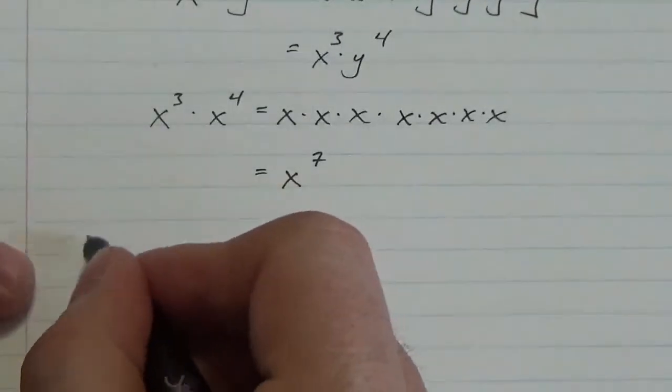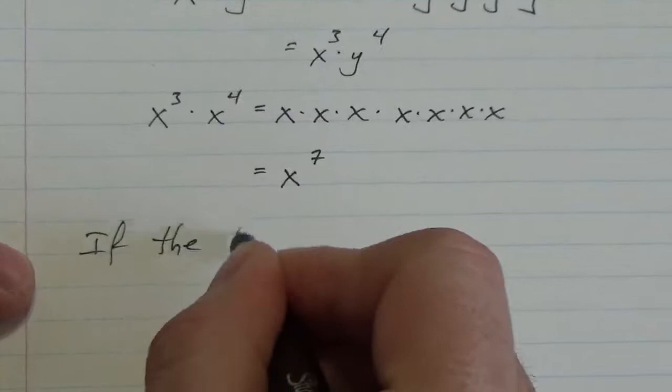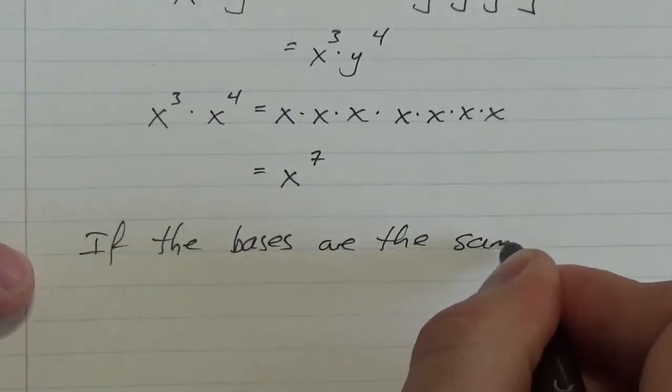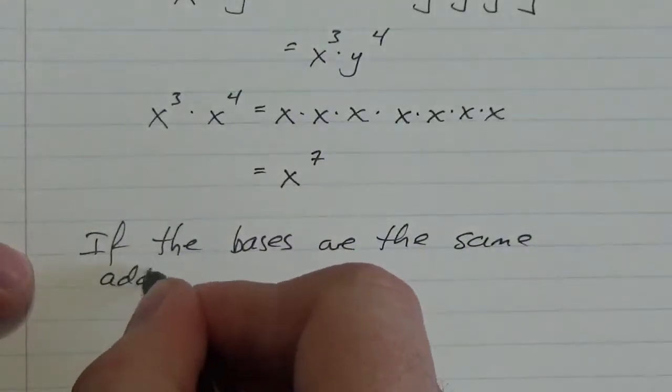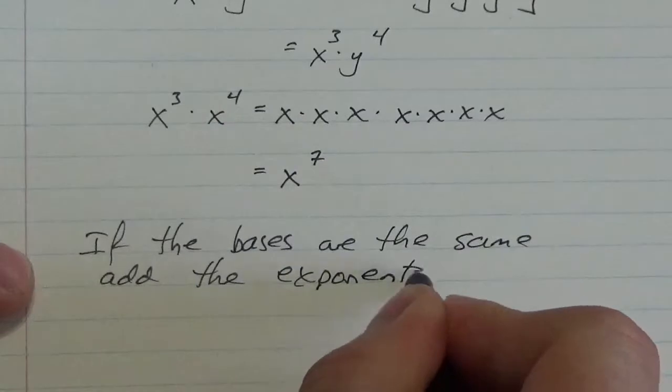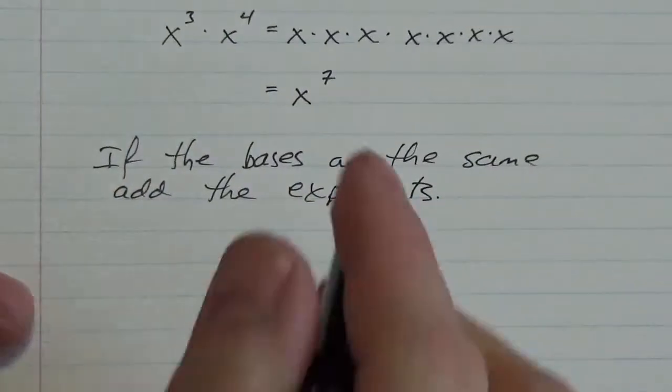So if the bases are the same, if the bases are the same, add the exponents. That's all we have to do. So let's just take another quick example here.